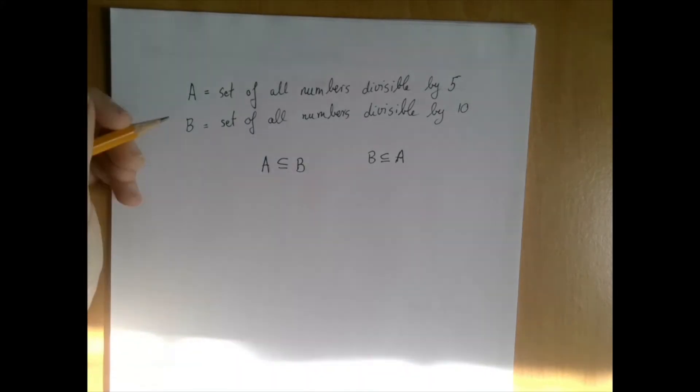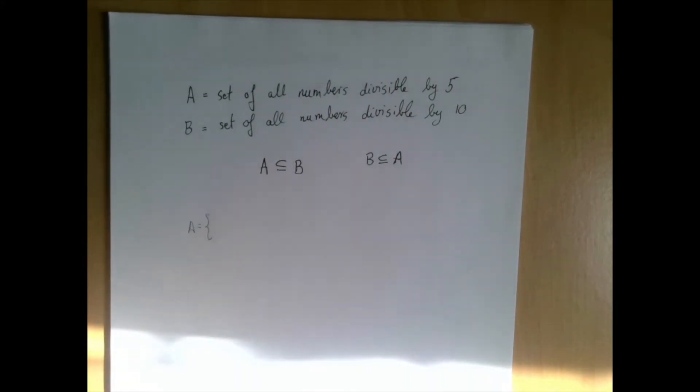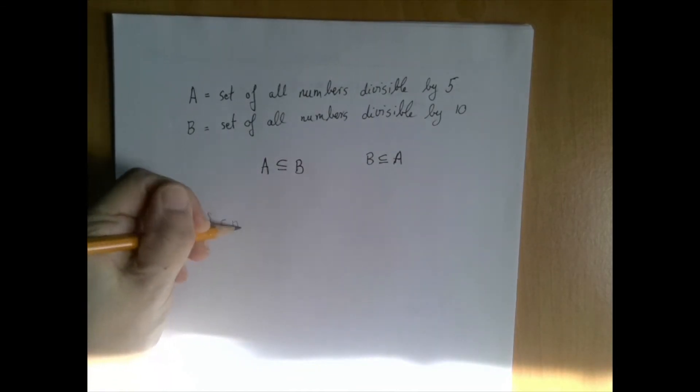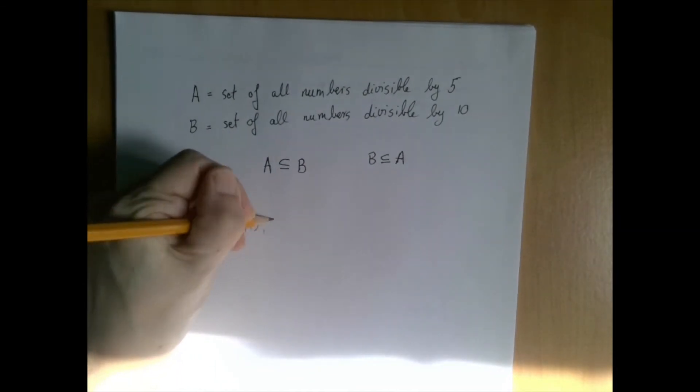We can start listing the elements of A. What numbers are divisible by 5? Well, there's the multiples of 5, something like 5, 10, 15, 20, 25.